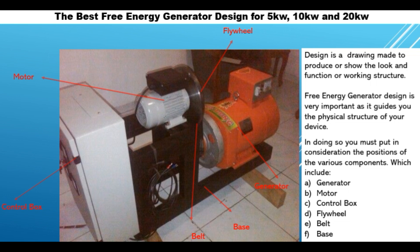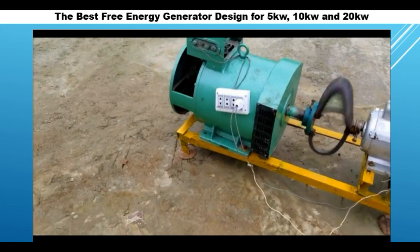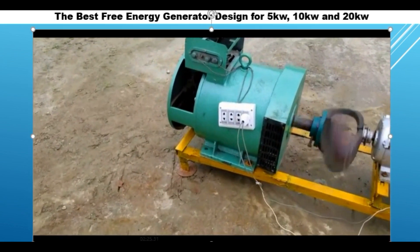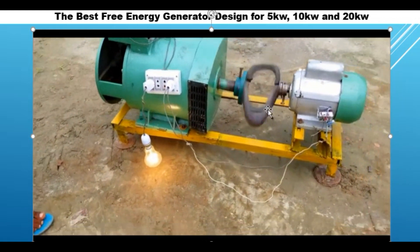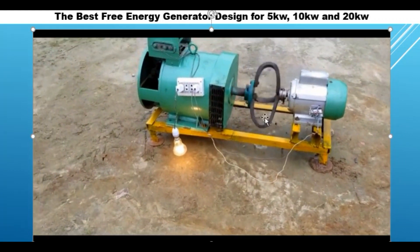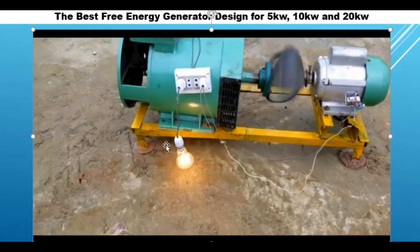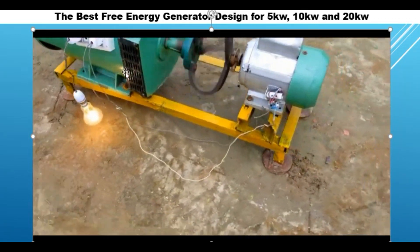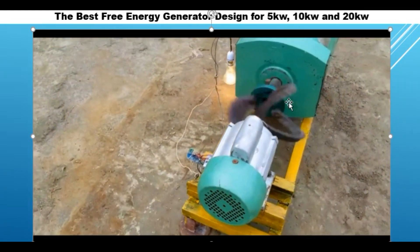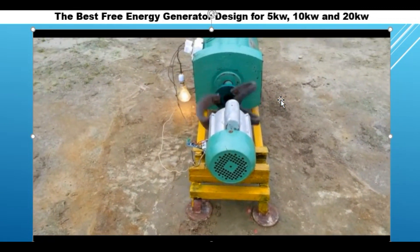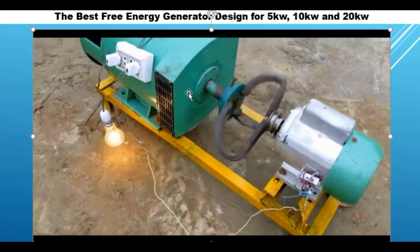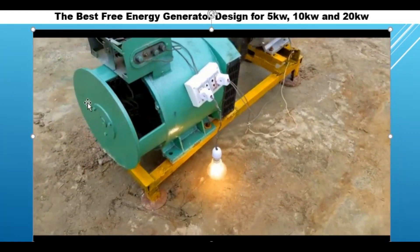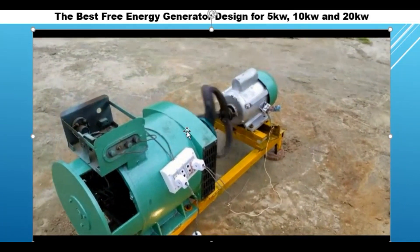Now let's look at this second design. You can see this design — if you look at it critically it looks very simple. You can see the generator, the motor, and the flywheel that uses the belt. The design looks very simple in the sense that it does not take up much space, but if you look at it there is no control panel here — everything is connected directly to the motor.